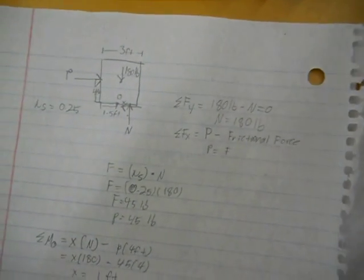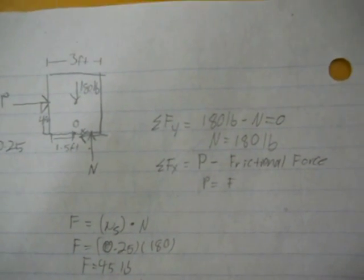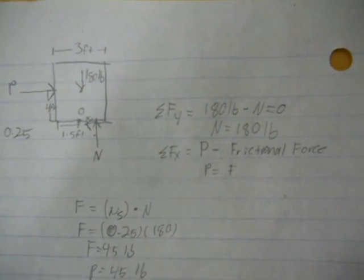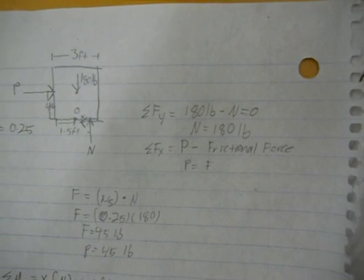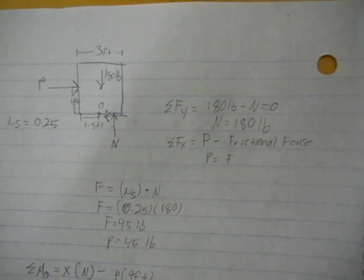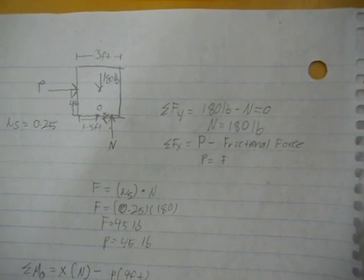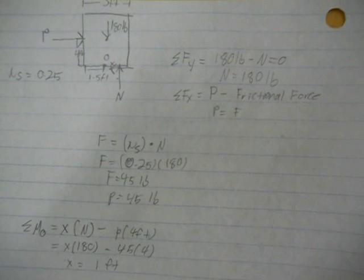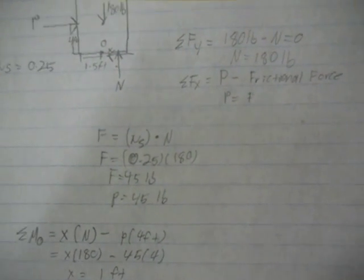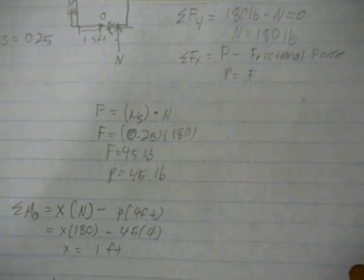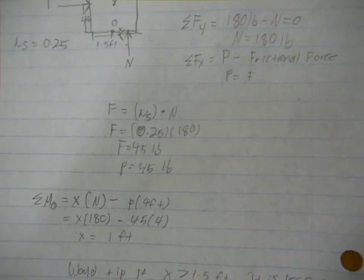The first thing we need to determine is the normal force exerted on the refrigerator. To do that, we sum our forces in the Y direction. We know that the weight of the refrigerator is 180 pounds, so we find N is 180 pounds. We then sum our forces in the X direction. Since we only have two forces — friction and the force applied by the man — we recognize that when on the verge of slipping, P is equal to F. And F equals mu sub s times N, where mu sub s is 0.25 and N is 180 pounds. So we determine that P is equal to 45 pounds.